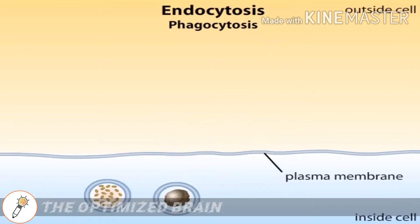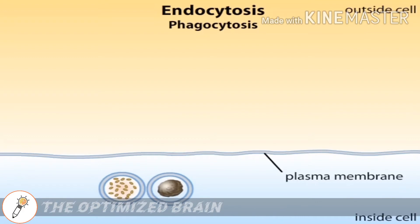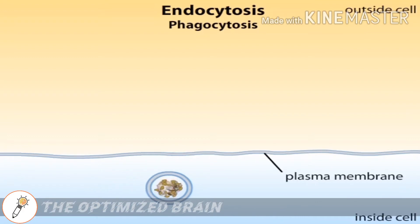Unicellular protists use phagocytosis for feeding, and some white blood cells use it for defending the body, engulfing foreign cells or substances. The resulting vesicle, called a phagosome, fuses with a lysosome and the contents are digested.